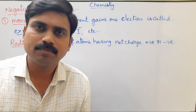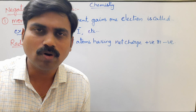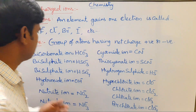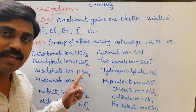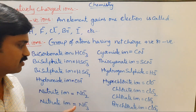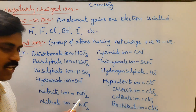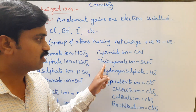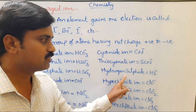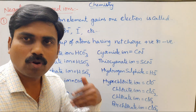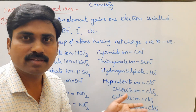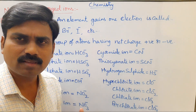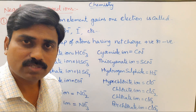Radical ions: a group of atoms having a net charge, either positive or negative, are called radical ions. Important mono-negatively charged radical ions: bicarbonate ion HCO₃⁻, bisulfite ion HSO₃⁻, bisulfate ion HSO₄⁻, hydroxide ion OH⁻, nitrite ion NO₂⁻, nitrate ion NO₃⁻, cyanide ion CN⁻, thiocyanate ion SCN⁻, hydrogen sulfide ion HS⁻, hypochlorite ion ClO⁻, chlorite ion ClO₂⁻, chlorate ion ClO₃⁻, and perchlorate ion ClO₄⁻.